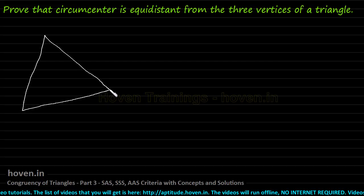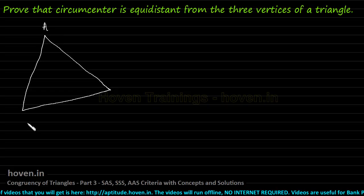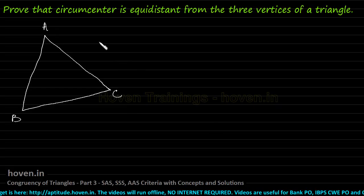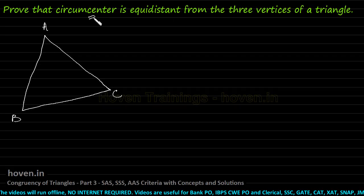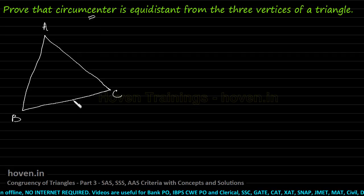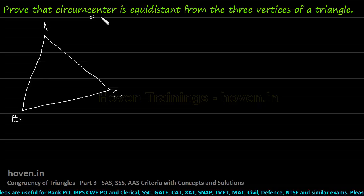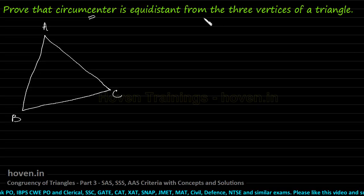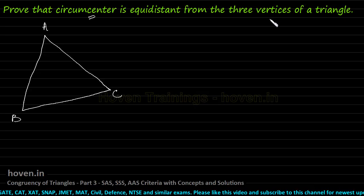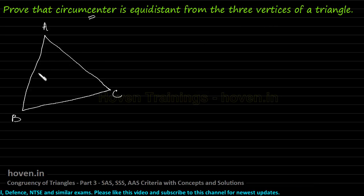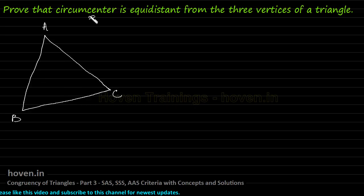Suppose this is a triangle with vertices A, B and C. The circumcenter is a point which is equidistant from the three vertices. The definition of circumcenter is the point at which the perpendicular bisectors of all three sides meet. But in order to prove that the circumcenter is equidistant from the three vertices, we must prove that all three perpendicular bisectors of a triangle are coincident — they meet at a given point called the circumcenter.